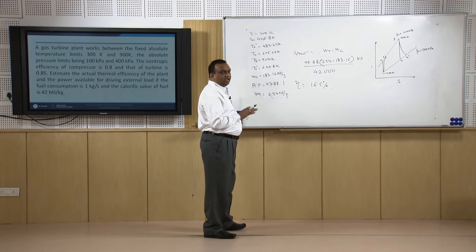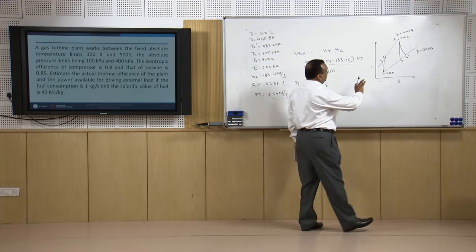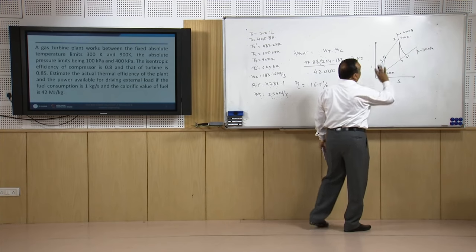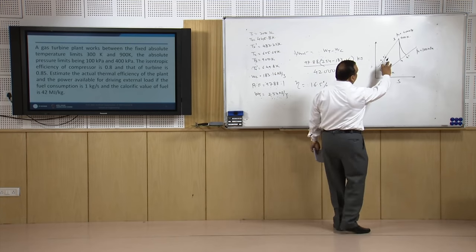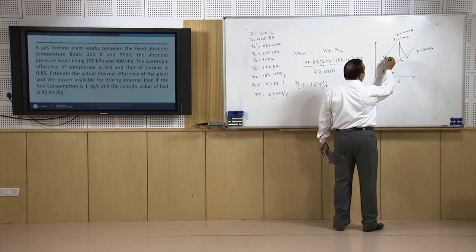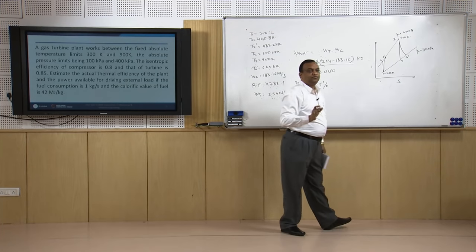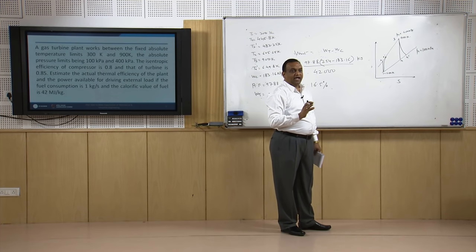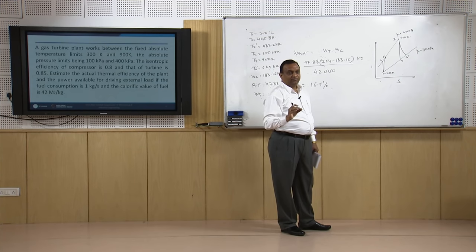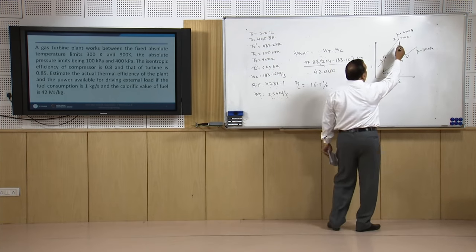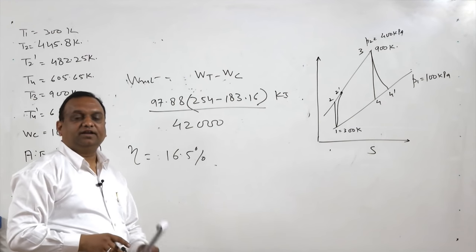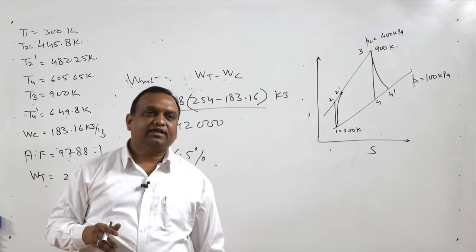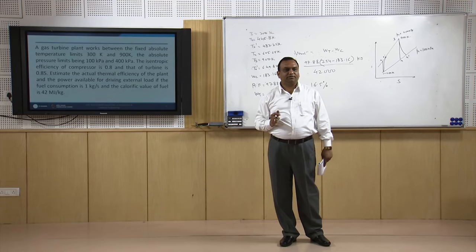One important thing to remember: the mass circulated in an actual gas turbine cycle is not constant. The compressor sucks in air, but in the combustion chamber the mass of the fuel is also added, and the flue gases — consisting of air and burnt fuel — take part in power generation in the turbine. That is all for today. In the next class we will further discuss gas turbines. Thank you.